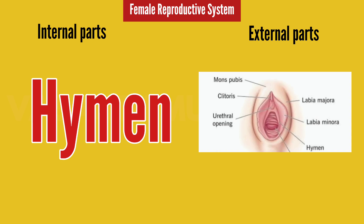If it is the first time of intercourse, the hymen will be torn apart, which is why there is bleeding. But after that point, the hymen is torn and bleeding will not occur again. So this is all about the internal and external structures of the female reproductive system.